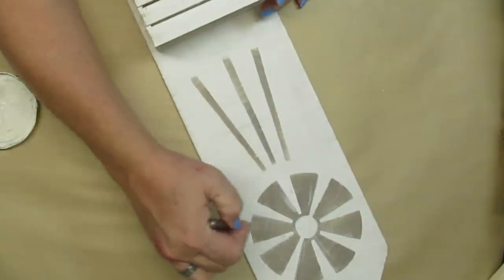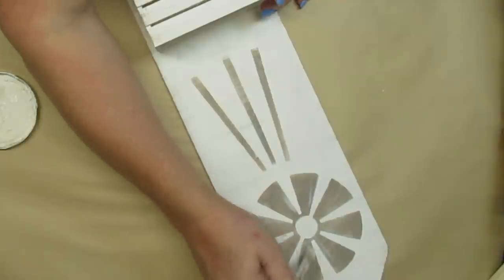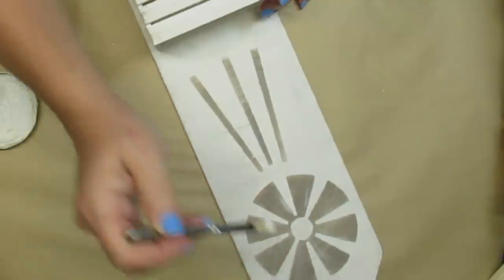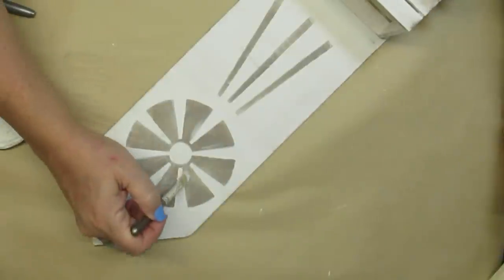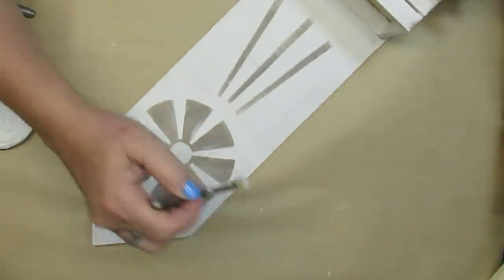Lastly I took a little bit of white on the brush and I'm just going over the same side as I did the silver. I just want to add a little bit more dimension and shadowing to the windmill blades just to help them look more three-dimensional.